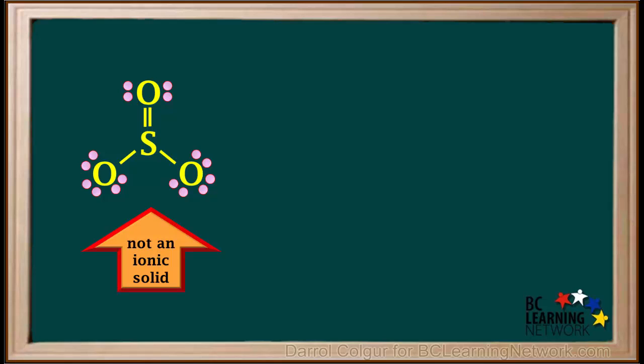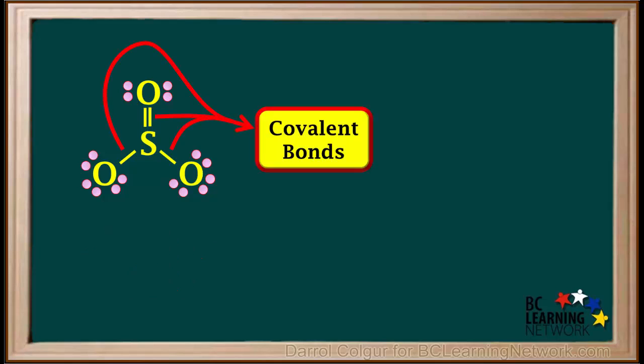So non-metal oxides are not ionic solids like metal oxides are. Instead, the atoms are joined by covalent bonds, where electrons are shared.